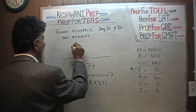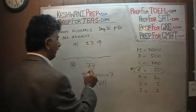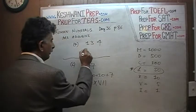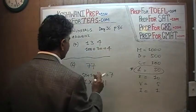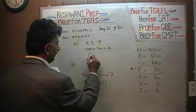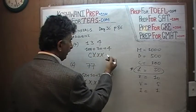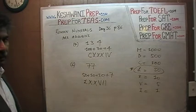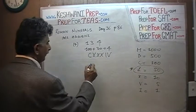Number seven: one hundred and thirty-four. How do we write it? One hundred plus thirty plus four. One hundred is just C. Thirty is X, X, X. And four is I before V — IV. So: C, XXX, IV. One hundred and thirty-four.